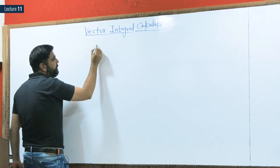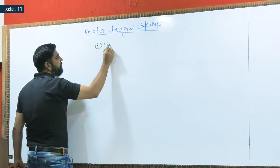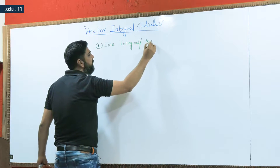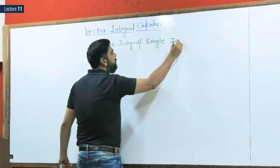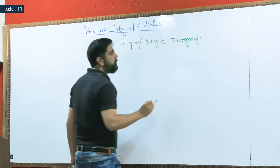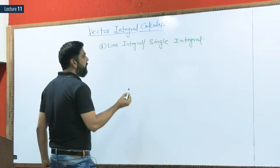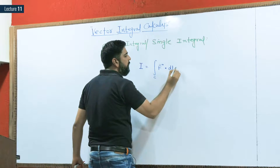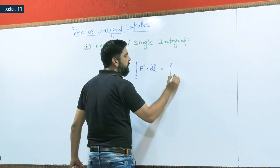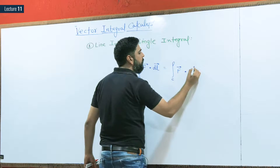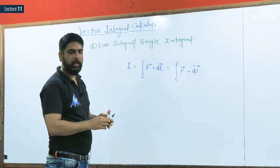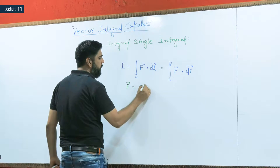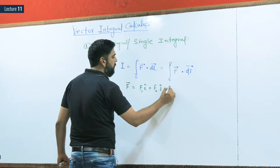In vector integral calculus, the first concept is the line integral, also called single integral. We write it as I = ∫F·dl, or equivalently ∫F·dr along curve C. Here, the vector F is given as F₁î + F₂ĵ + F₃k̂.